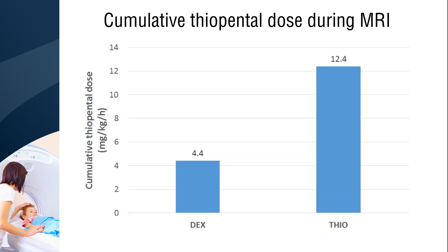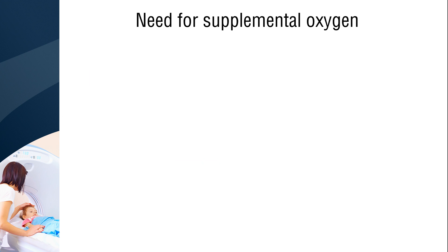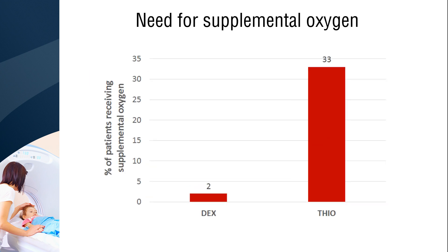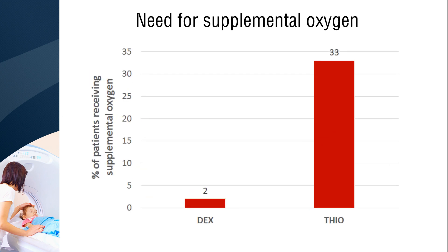The cumulative thiopental dose administered during MRI was more in the thiopental group than that in the dexmedetomidine group. Supplemental oxygen was given to only 2% of patients in the dexmedetomidine group, and 0 to 33% of patients in the thiopental group.